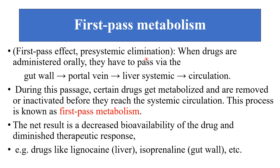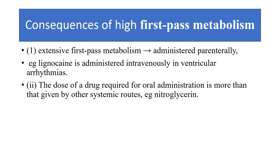What is first-pass metabolism? First-pass metabolism, or pre-systemic elimination, occurs when drugs administered orally pass via the gut wall, portal vein, and liver before reaching systemic circulation. During this passage, certain drugs get metabolized, inactivated, or removed before reaching systemic circulation. This process is known as first-pass metabolism. The net result is a decrease in bioavailability of the drug and a diminished therapeutic response. Drugs like lignocaine and isoprenaline have high first-pass metabolism and should be given parenterally.